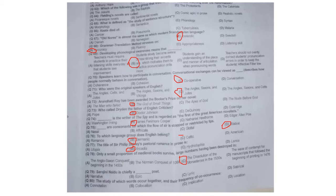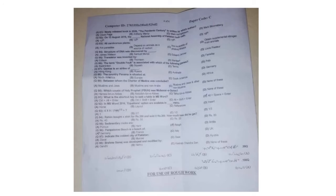Question 78: Only a small proportion of medieval books survived, large numbers having been destroyed in the dissolution of the monasteries in the 1530s. Question 79: Sarojini Naidu is chiefly a narrative poet. Question 80: The study of which words occur together and their frequency is called collocation.